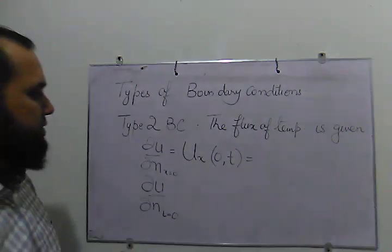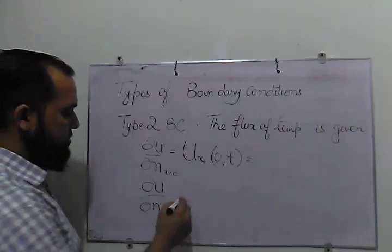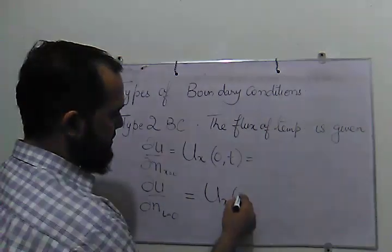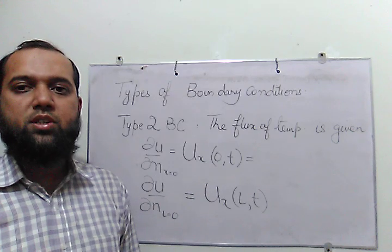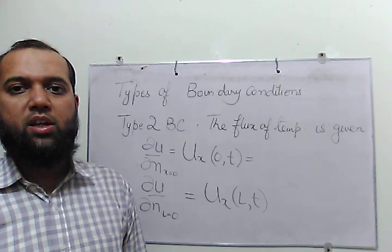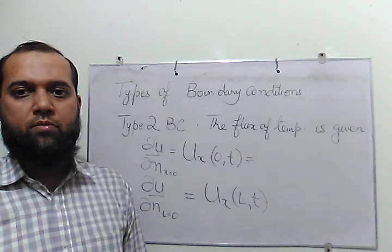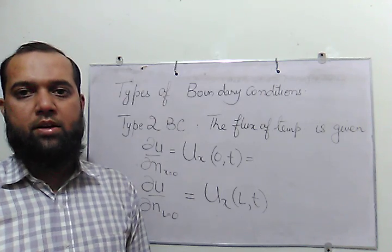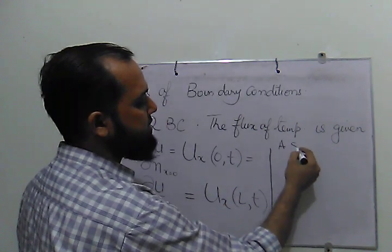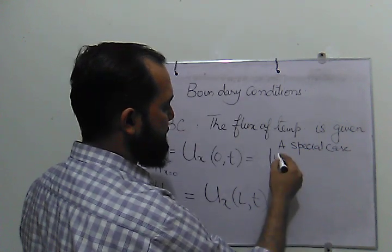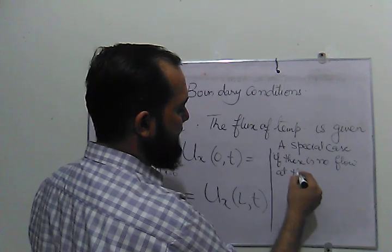This n is the normal derivative. This means that the temperature is flowing in one direction only — the x direction. So the temperature flux, that is the rate at which temperature is flowing through the end of the rod, is what is specified. In that boundary condition, the simple case is if there is no temperature flow from the end. That is a special case of type 2 boundary condition.